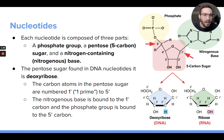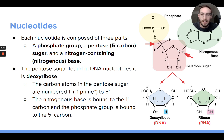On that pentose sugar, we number the carbons: there's the 1-prime, 2-prime, 3-prime, 4-prime, and 5-prime carbon. The phosphate group is attached to the 5-prime carbon, and the nitrogenous base is attached to the 1-prime carbon.